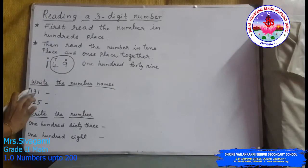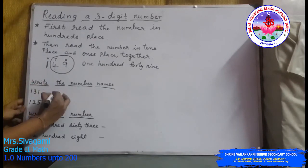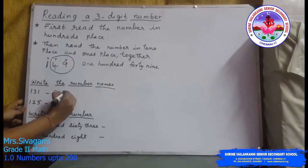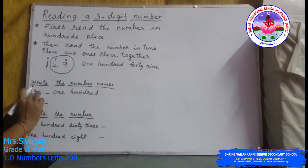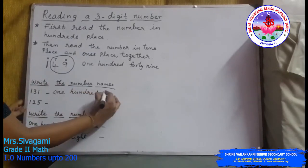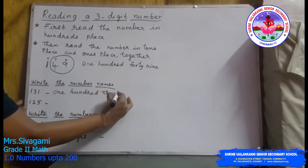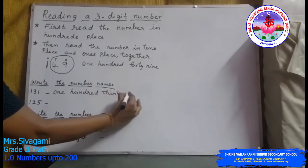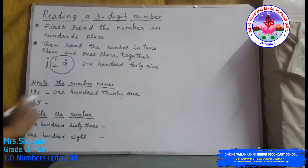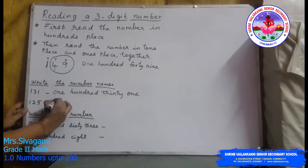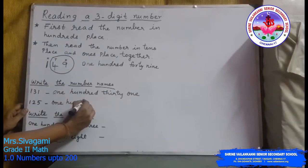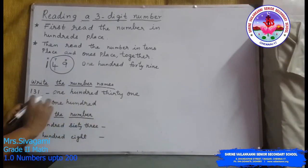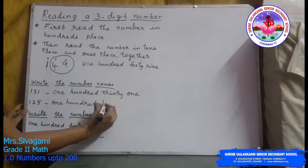The same way, you will write the number names. You write the hundreds place first, then write the number name for the tens and ones place together. For example, 131 is one hundred and thirty-one. Another example is 125 — you write one hundred first, then twenty-five together.